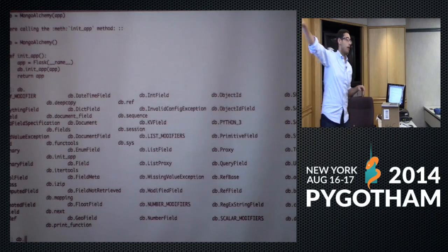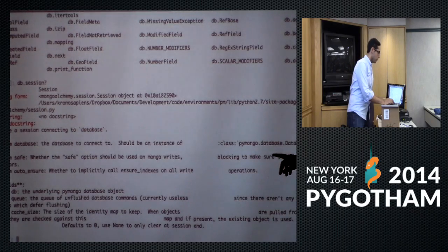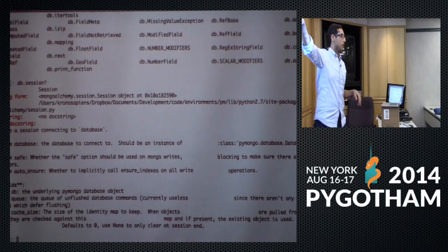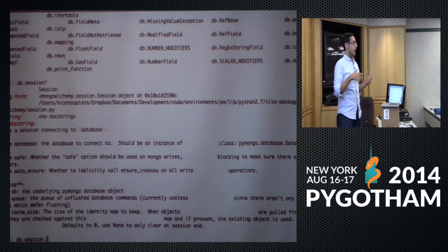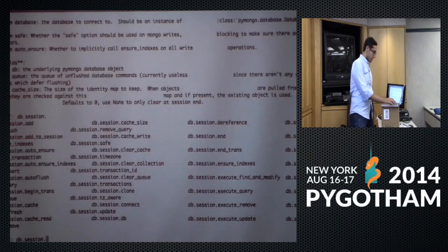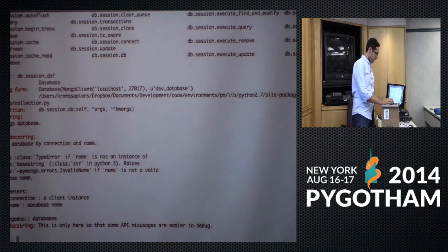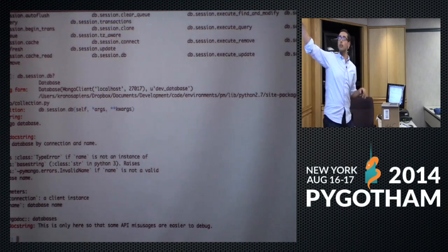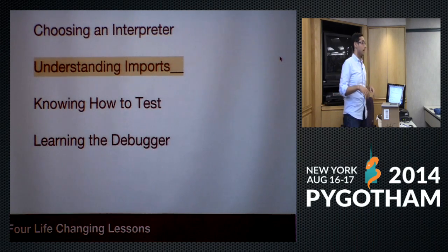I could see that my database object came from FlaskMongoAlchemy. Using tab completion on it, I could see its features — one is session, which turns out to be in MongoAlchemy. So we'd left FlaskMongoAlchemy and were now in MongoAlchemy. Using tab completion on the session object, I found `database`, and that is in PyMongo — the actual connection to my MongoDB database. This would have taken me much longer to find without IPython's tools.